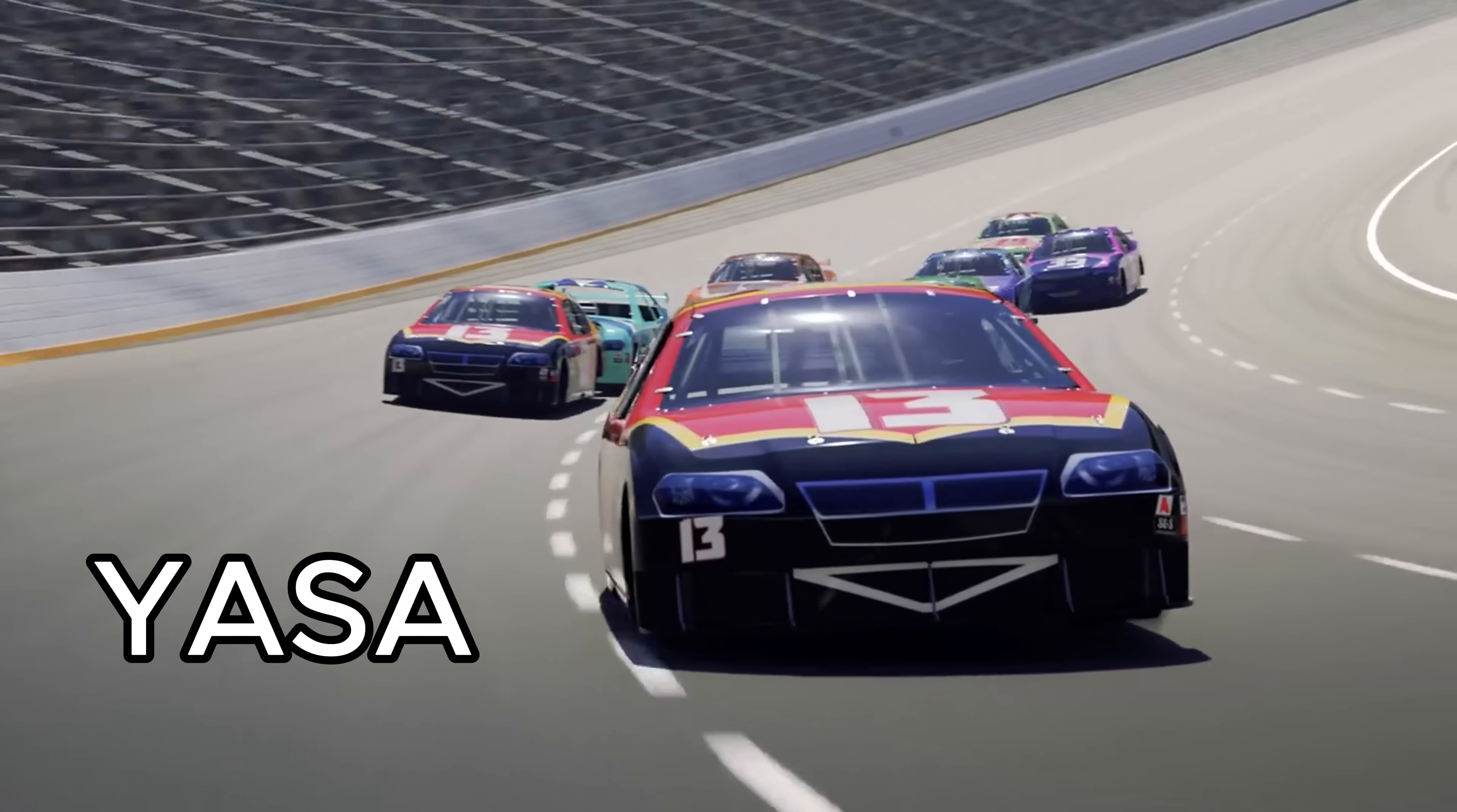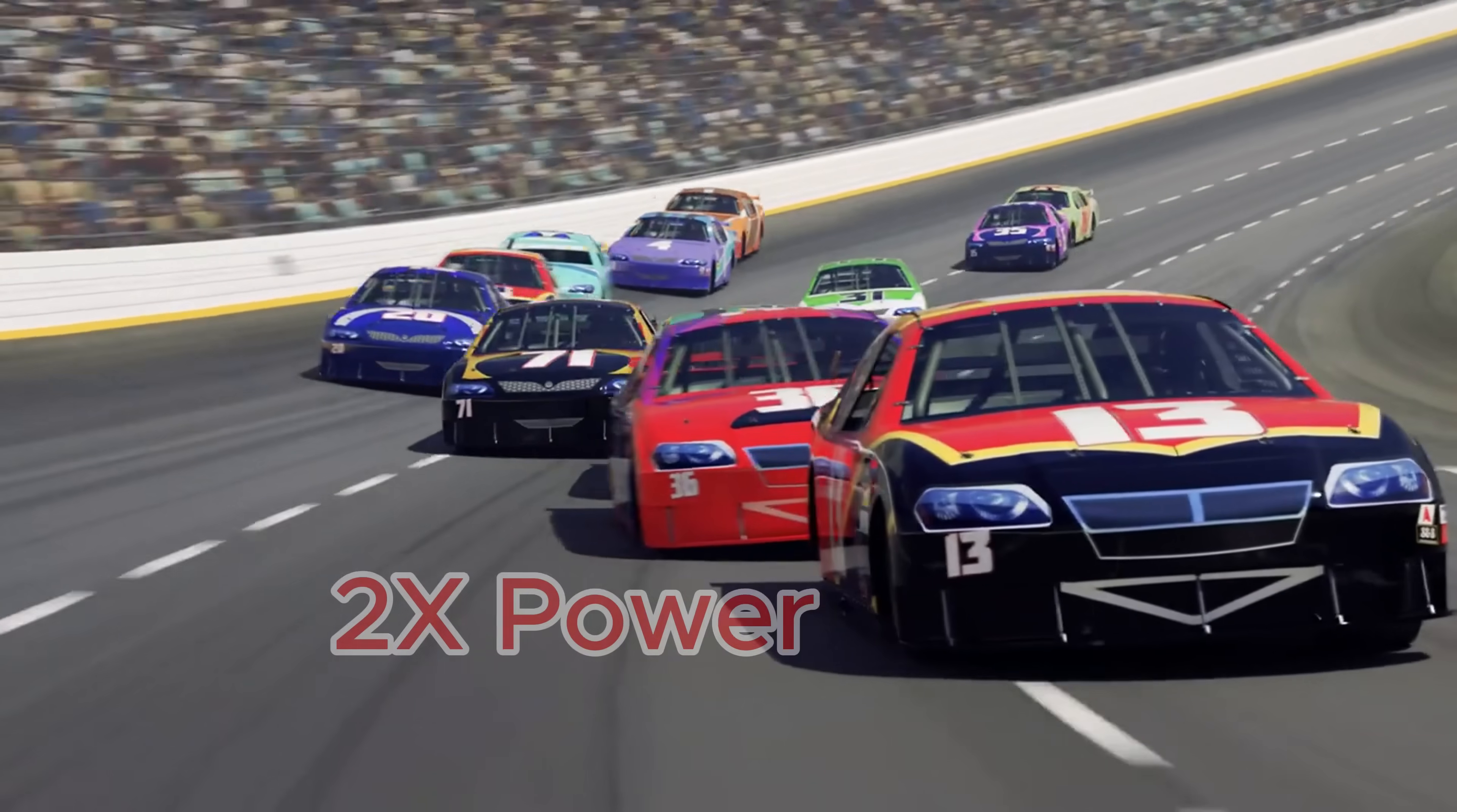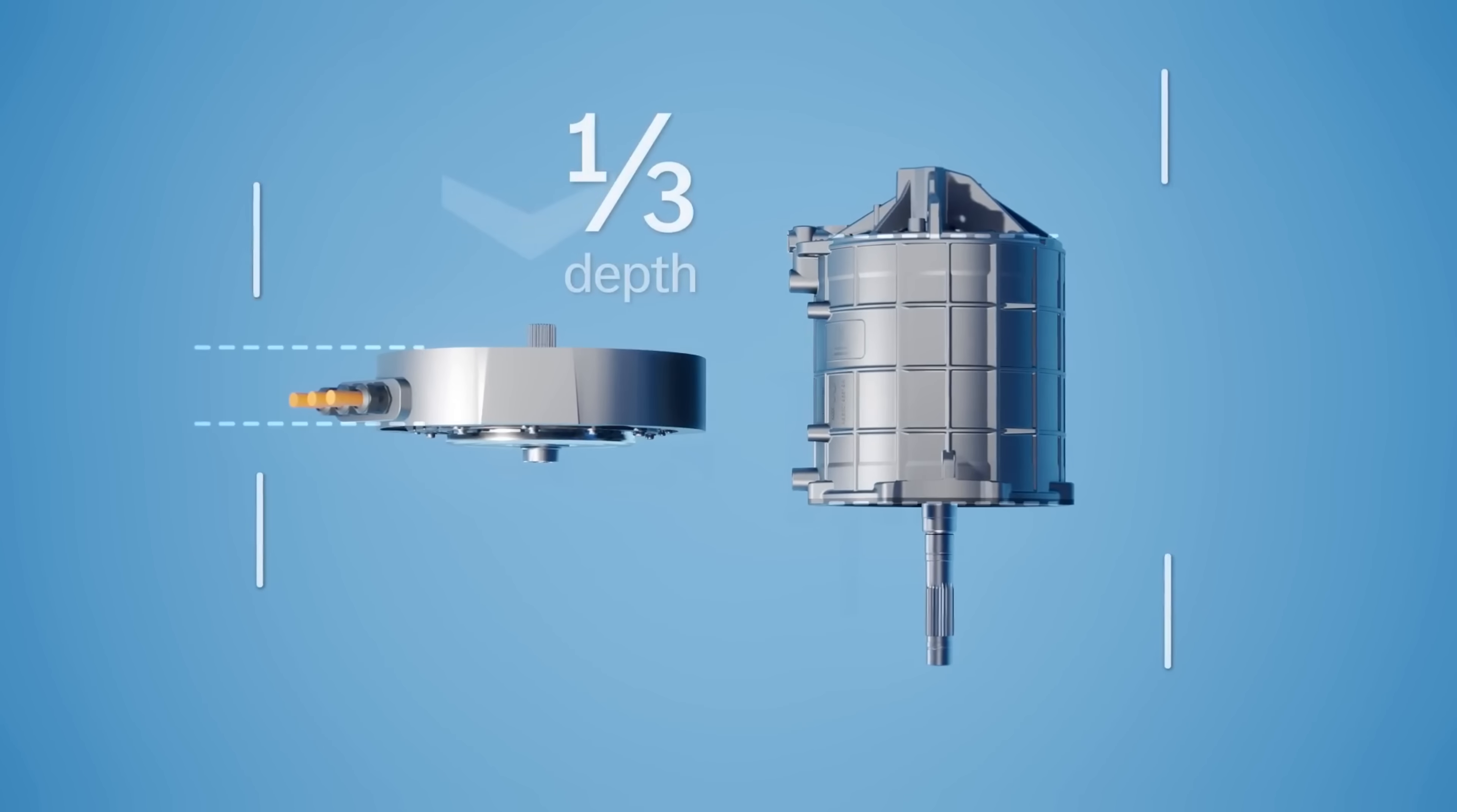YASA's yokeless axial flux motor offers up to four times the torque density and double the power density of traditional motors. It's 50% lighter and just 20% the depth of a comparable radial flux machine.